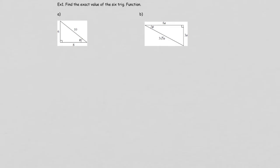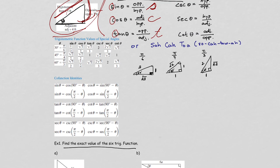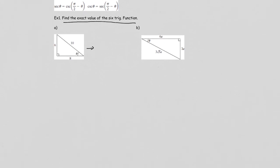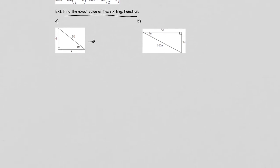The first example is finding the exact value of all six trig functions given a right triangle. If you use my method, the very first thing to do is redraw your right triangle with the right angle on the right bottom corner always.